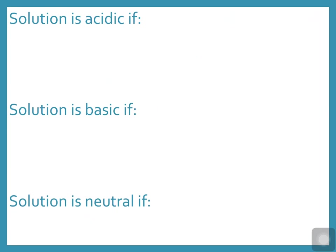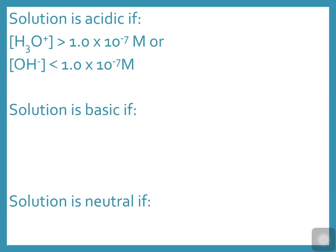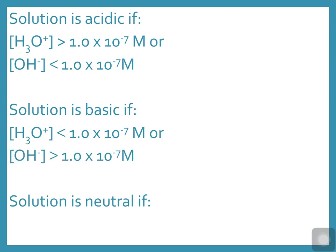For something to be acidic, the hydronium ion concentration needs to be greater than 1×10⁻⁷ mol/L, or the hydroxide ion concentration needs to be less than 1×10⁻⁷ molar. The reverse is true for basic solutions — less hydronium or more hydroxide. A solution is neutral if hydronium and hydroxide ion concentrations are equal to each other and to 1×10⁻⁷ mol/L.